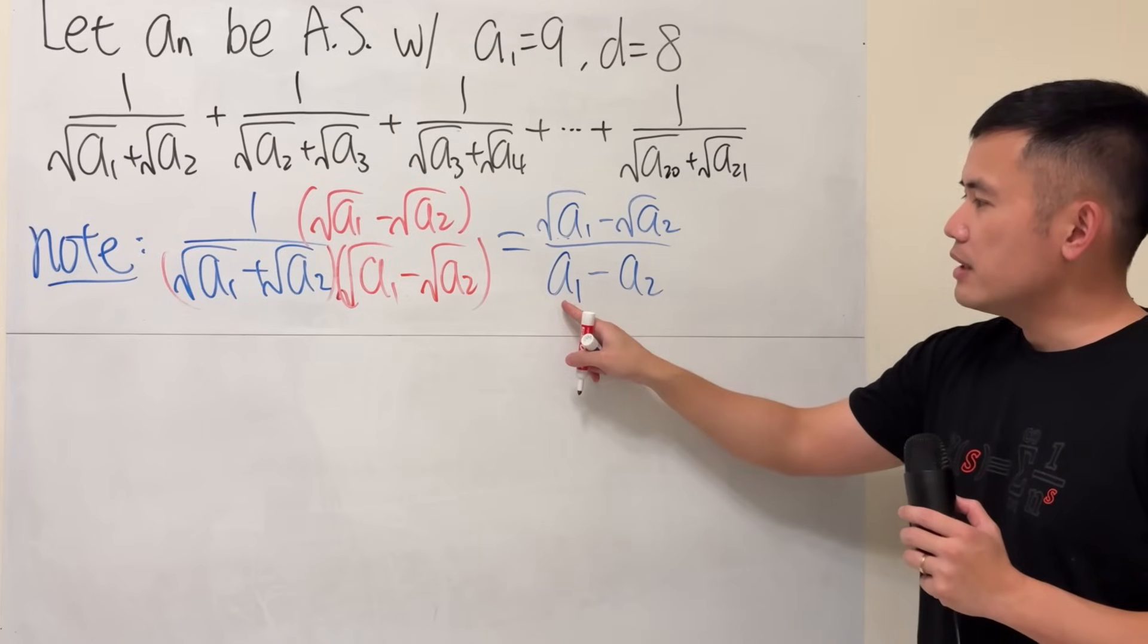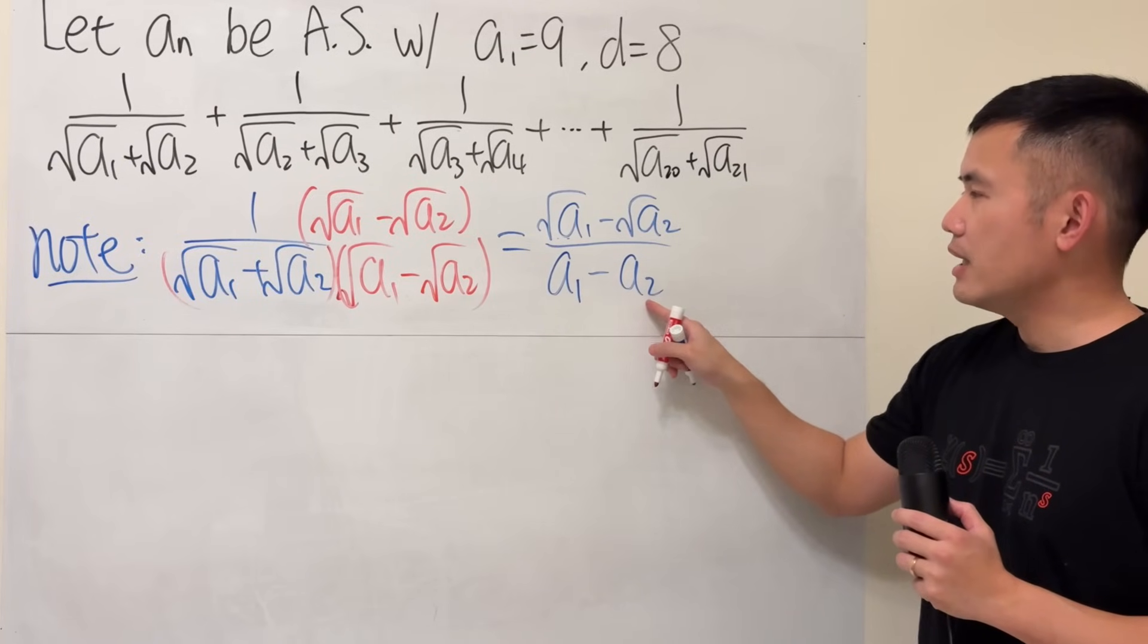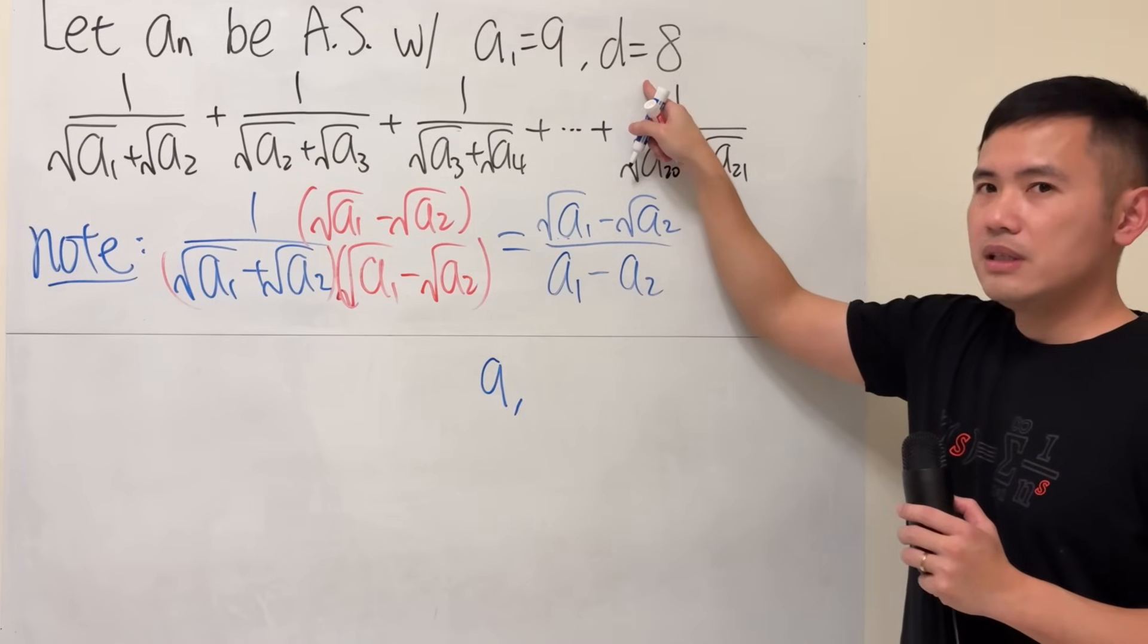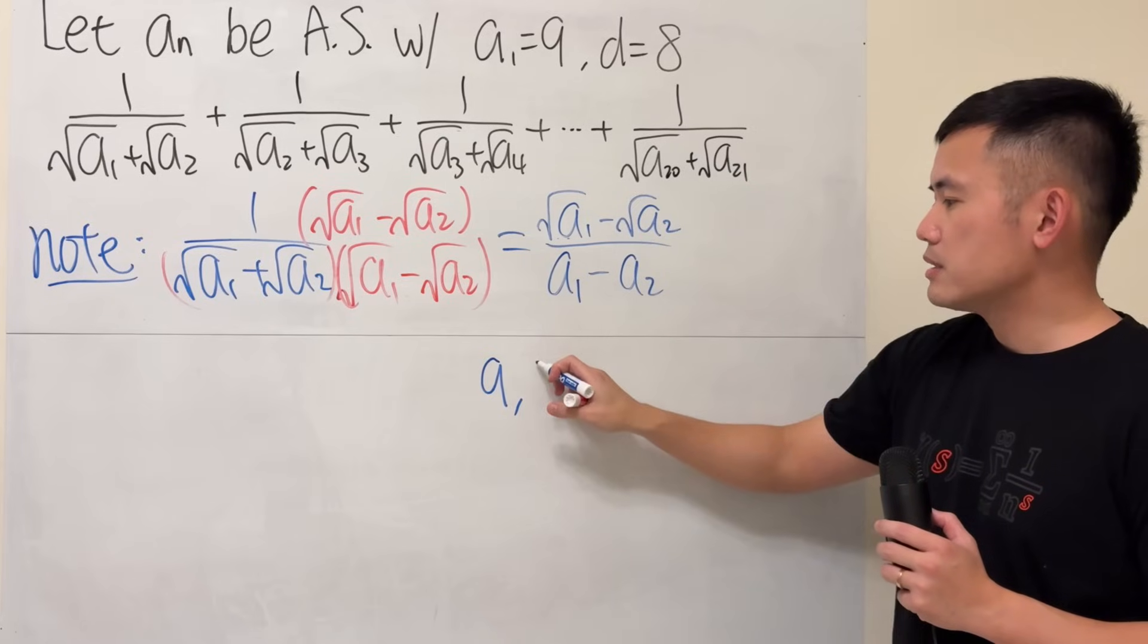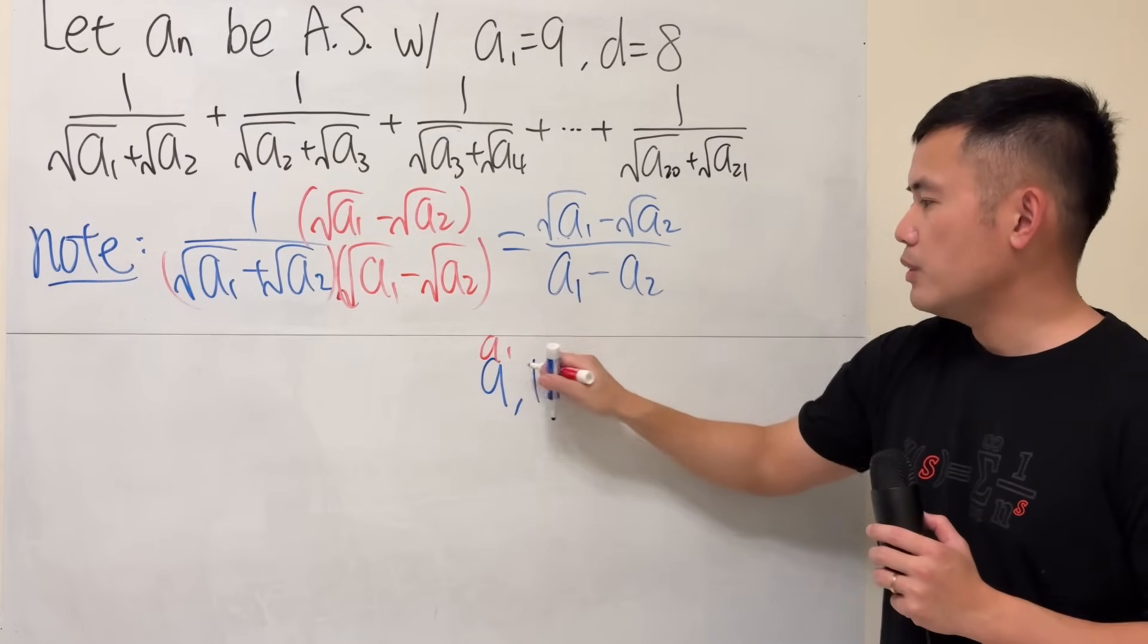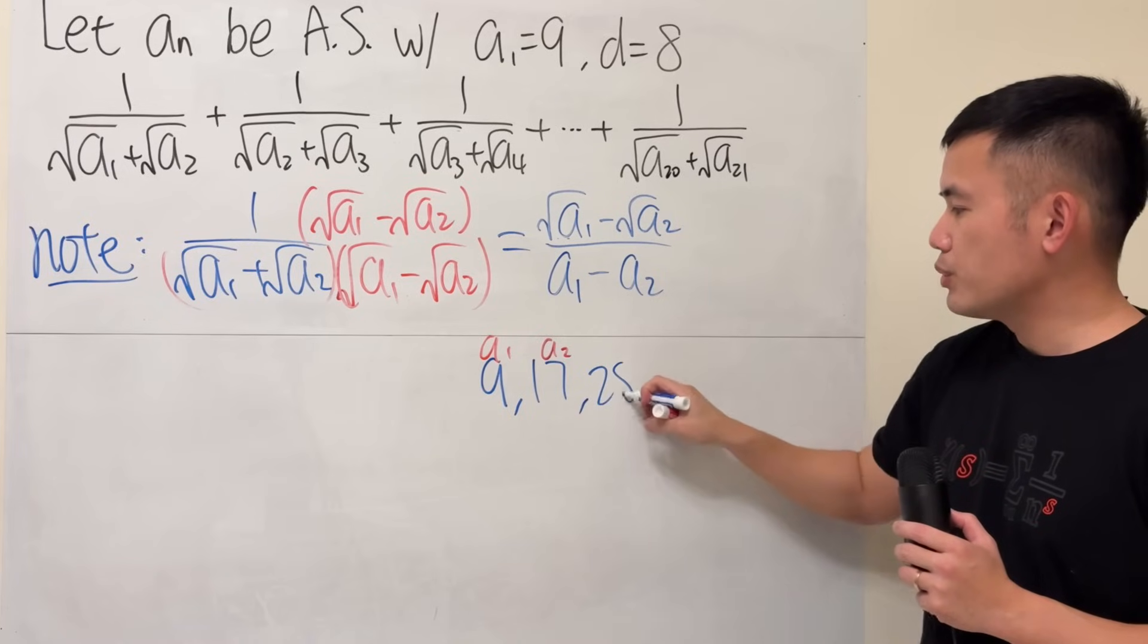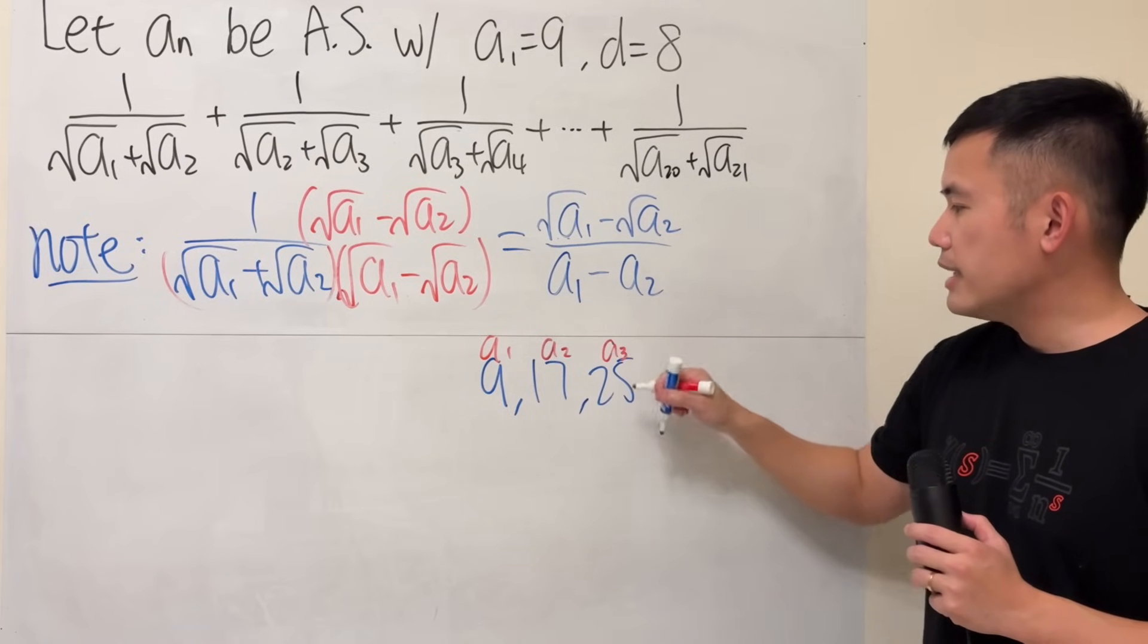And if you look at a1 minus a2, let's take a look. a1 is 9. Because the common difference is 8, the next term is going to be 17. a1, a2. And then the next term is going to be just keep adding 8, which is 25, and so on.